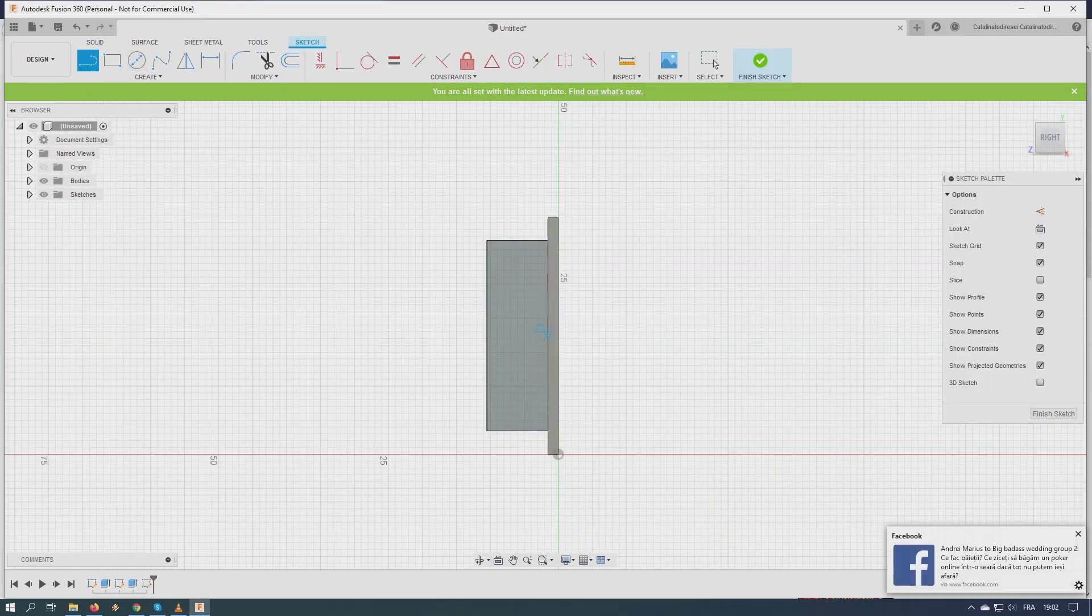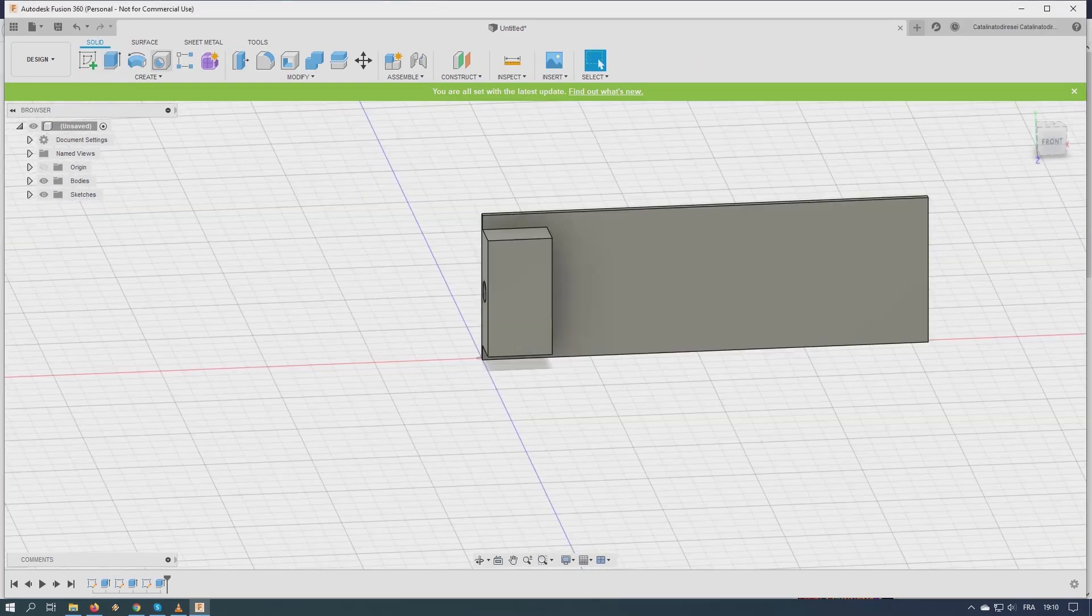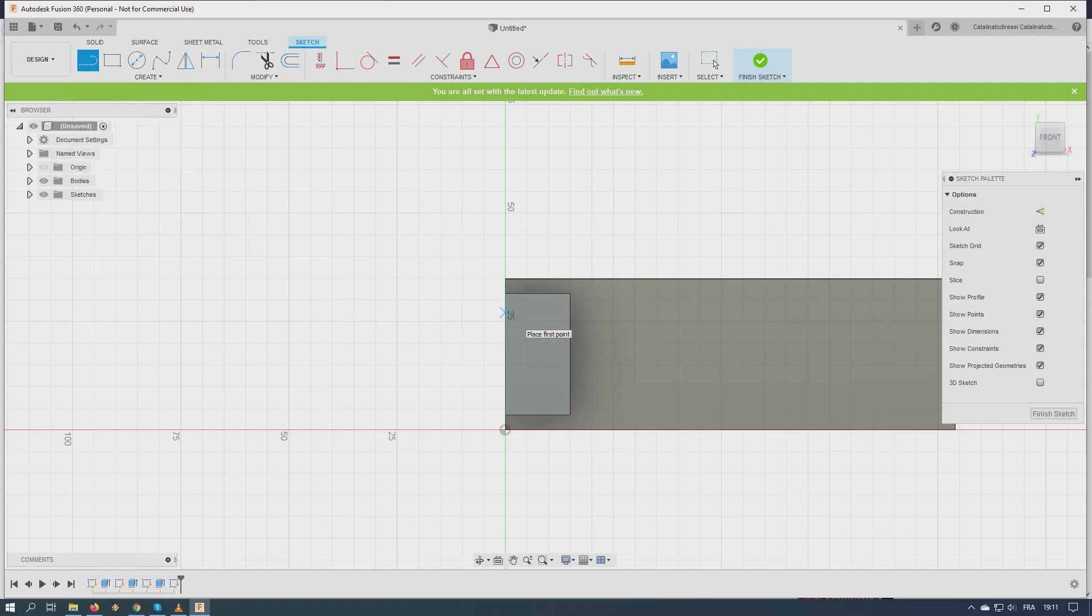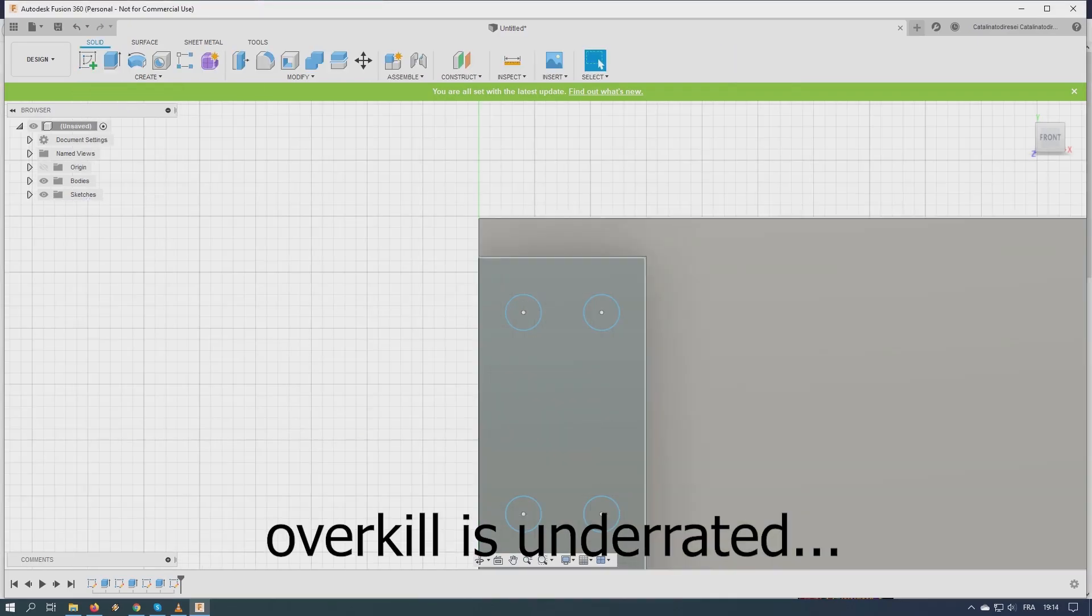I'm designing the part with an integrated cover to replace the original. It will be fixed to the machine with 4 M3 screws, which should be quite enough.